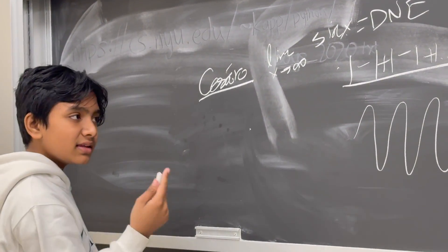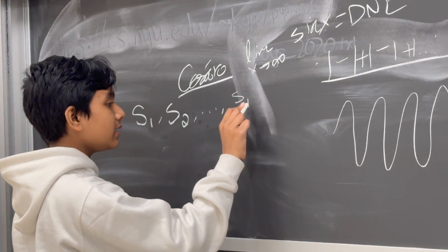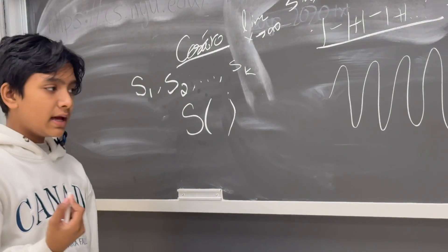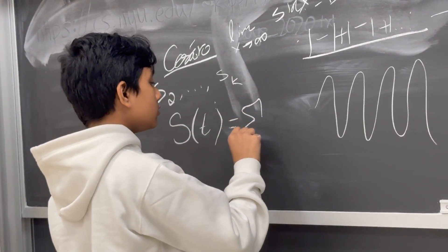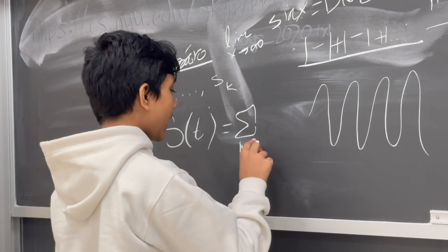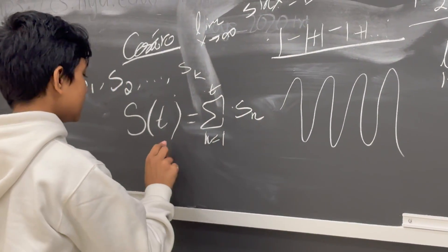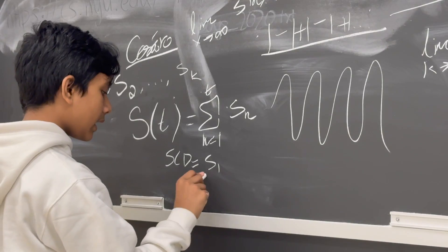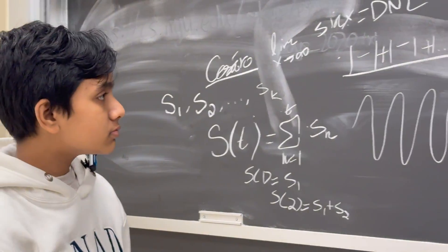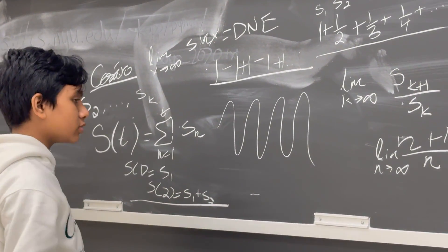So, what is a partial sum exactly? Well, given the sequence S1, S2, ..., SK, then the partial sum function S(t) is equal to the sum of all elements of the sequence from n equals 1 to t. So, one example is that S(1) is just S1, S(2) is S1 plus S2, and so on and so forth, progressively. So that is how the partial sum function works.